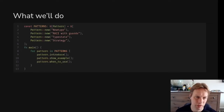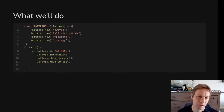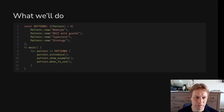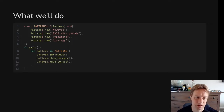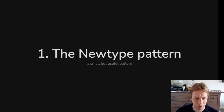So here are the patterns we're going to look at. We're going to look at the new type pattern, the RAII pattern, the type state pattern, and the strategy pattern. I'll just talk about what they are and have a look at an example of when you might use them.